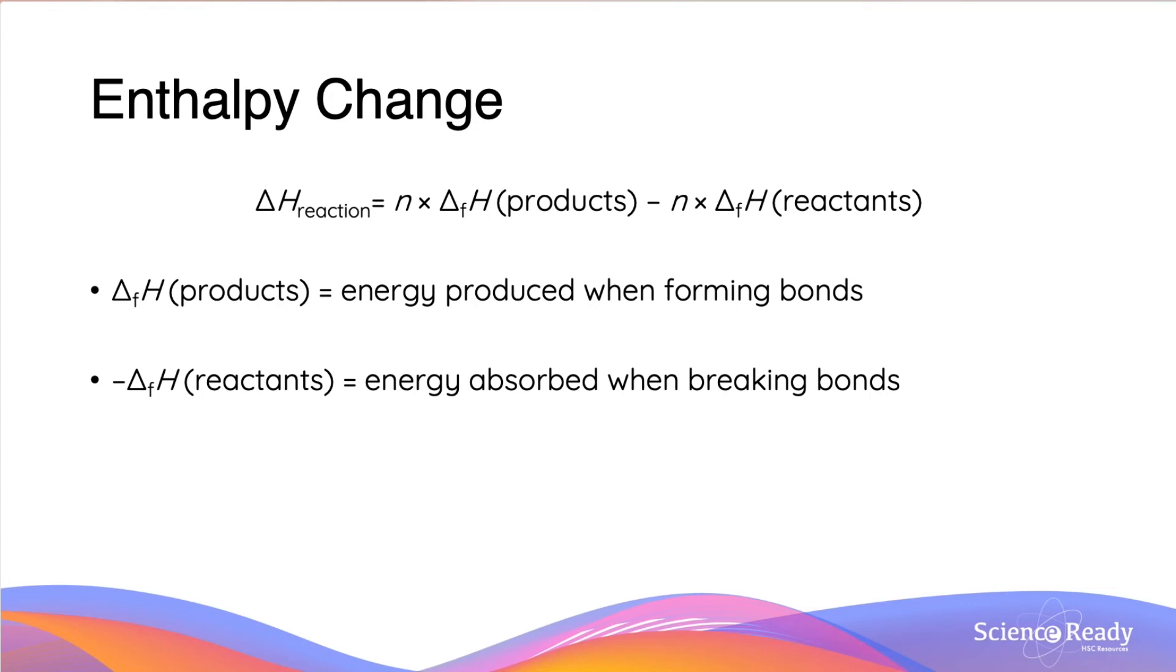Now we can calculate the enthalpy change using this formula: delta H of the reaction equals to N, which is the number of moles, times the delta H of formation of the products minus the number of moles of the reactants times the delta H of formation of the reactants.